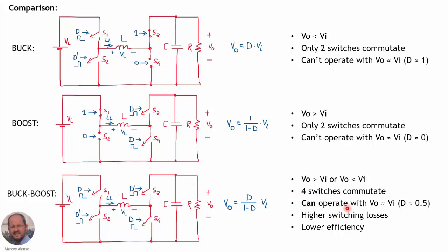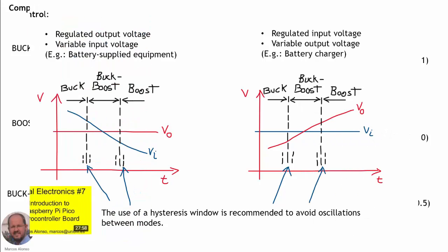An advantage of the buck-boost mode is that we can operate when the output voltage is very similar to the input voltage, because the duty cycle is around 0.5. By switching from one operating mode to another, we can operate with any ratio of input voltage to output voltage: the buck converter for output voltages lower than the input, the boost converter for output voltages higher than the input, and the buck-boost converter when they are close.